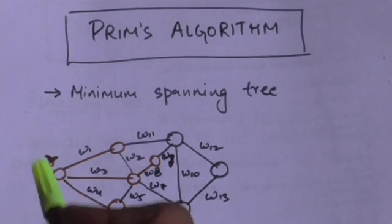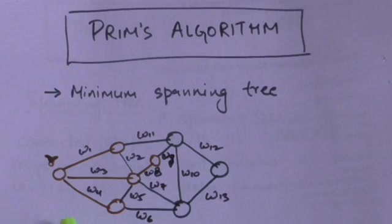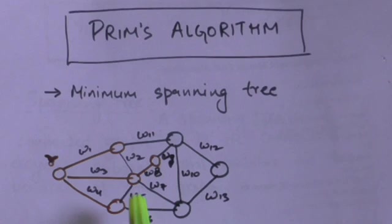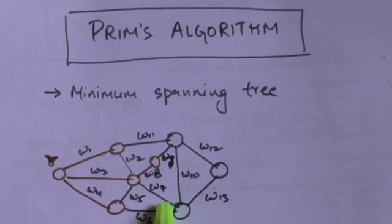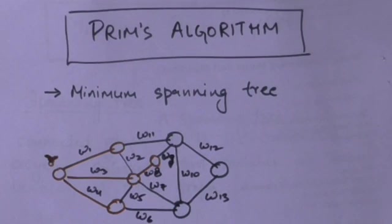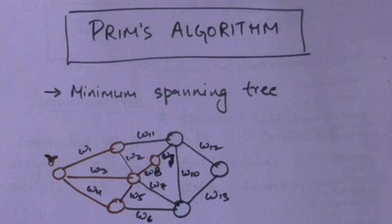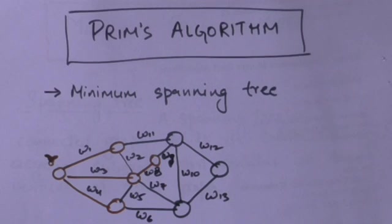In Prim's algorithm, at each step we find an edge with minimum weight which joins a vertex of the growing minimum spanning tree to a vertex of the graph which is not included in the growing minimum spanning tree. We include this edge in the growing minimum spanning tree along with the vertex it joins.